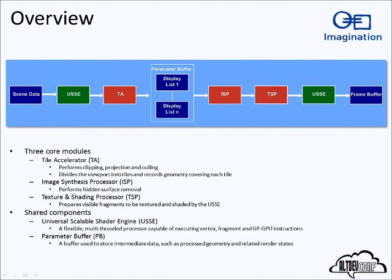There are two other shared components. The USSEs — universal scalable shader engines — are general-purpose processors that can do vertex, fragment, and GPGPU instructions; they're the workhorse grunt that does the calculations needed to draw your graphics, used in both the vertex stage and the fragment processing stage. The other part is the parameter buffer, the intermediate buffer that stores the transformed geometry for processing later on.